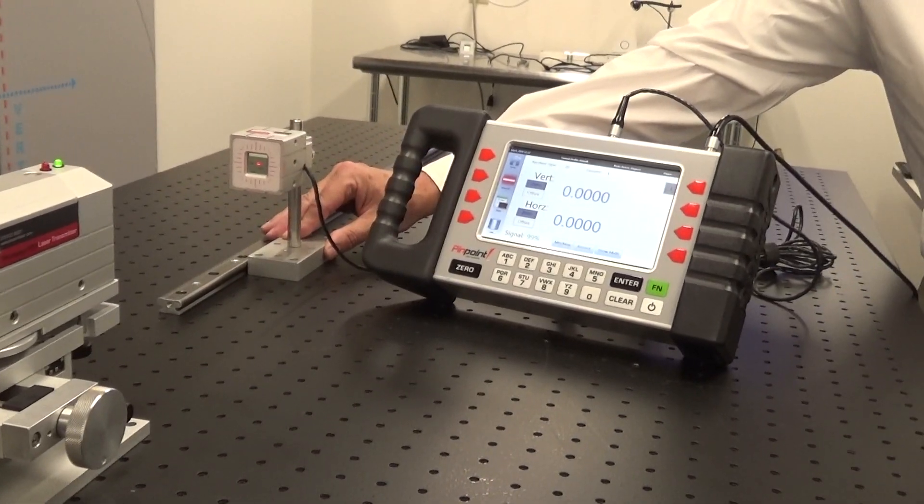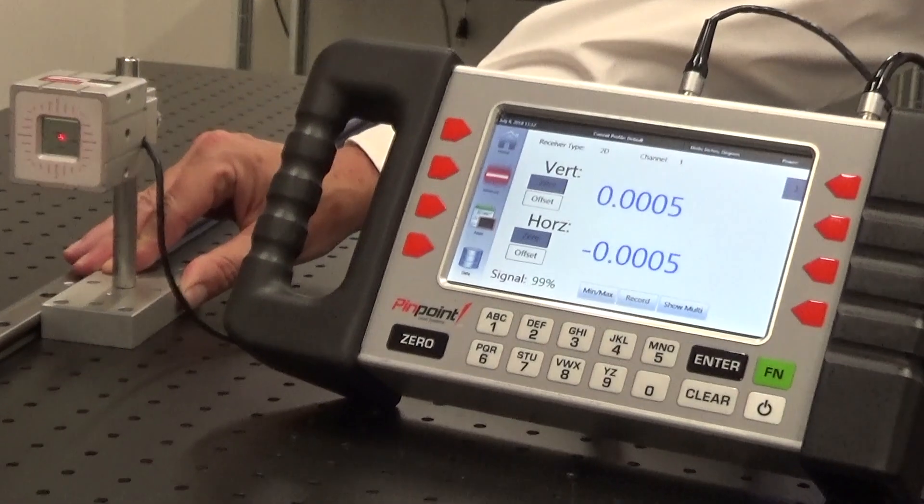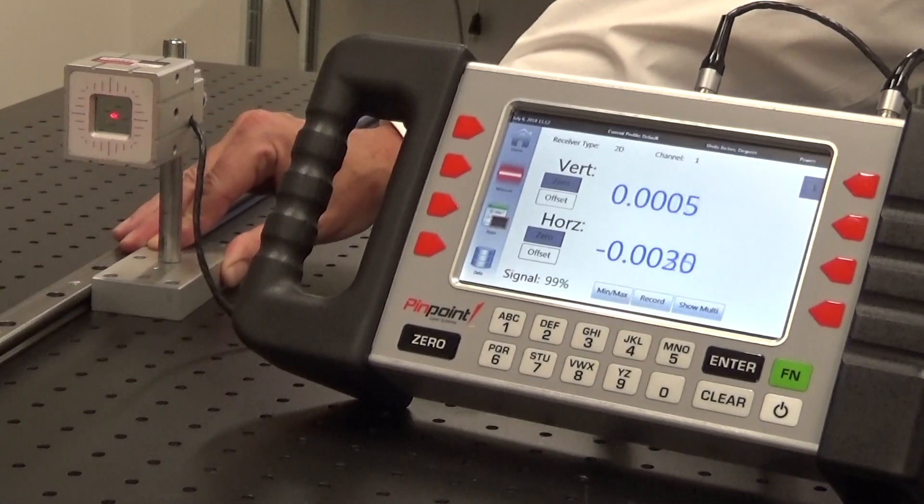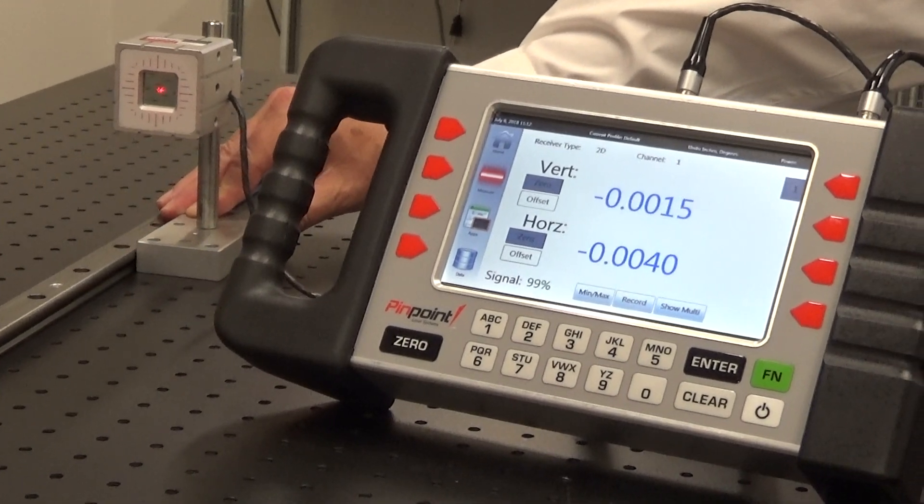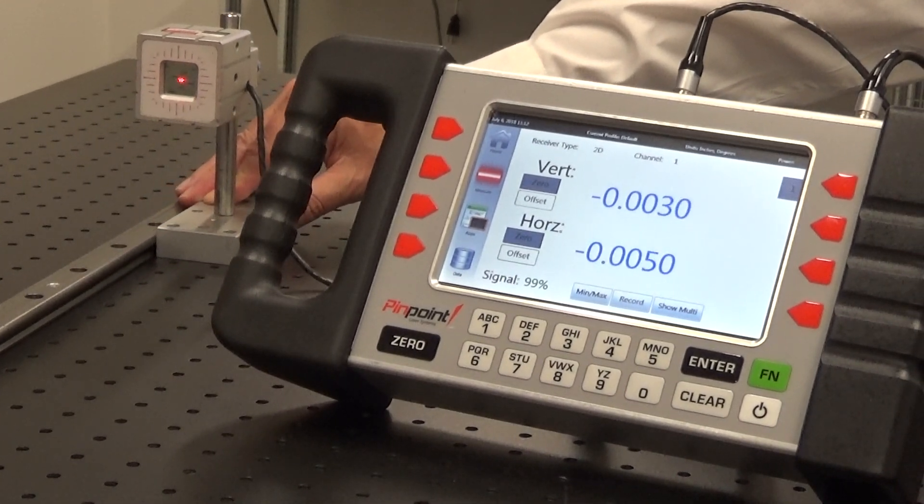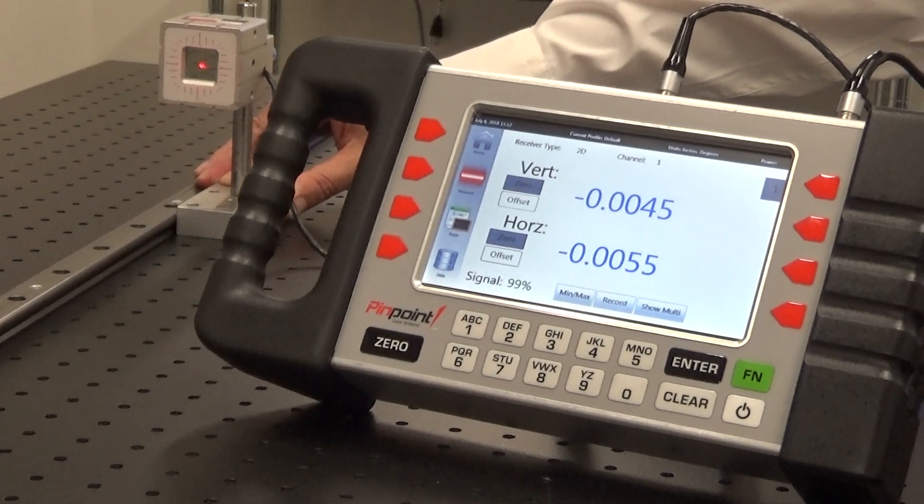You should be able to see minor changes as we slide the receiver down the rail. And these should show you the places where it may be possible to make adjustments to create a perfectly straight rail.